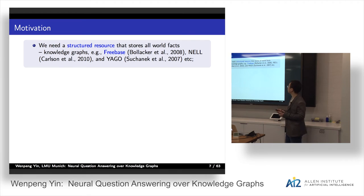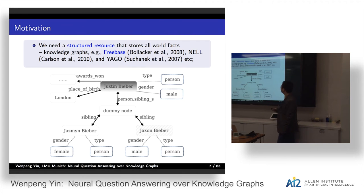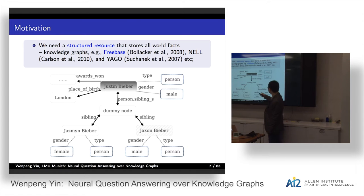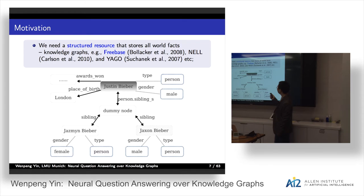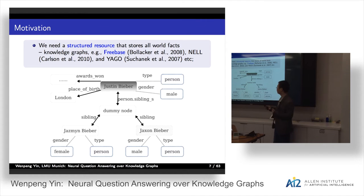In this kind of application, we need a structured resource that stores all world knowledge. Knowledge graphs like Freebase are exactly what we want. For example, here you can find the entity Justin Bieber is a person, and it's male, and it has some sibling relationship. So in this resource, if you give a query on it, it can return the gender of Justin Bieber directly and very exactly. That's why we want to do question answering over knowledge graphs.